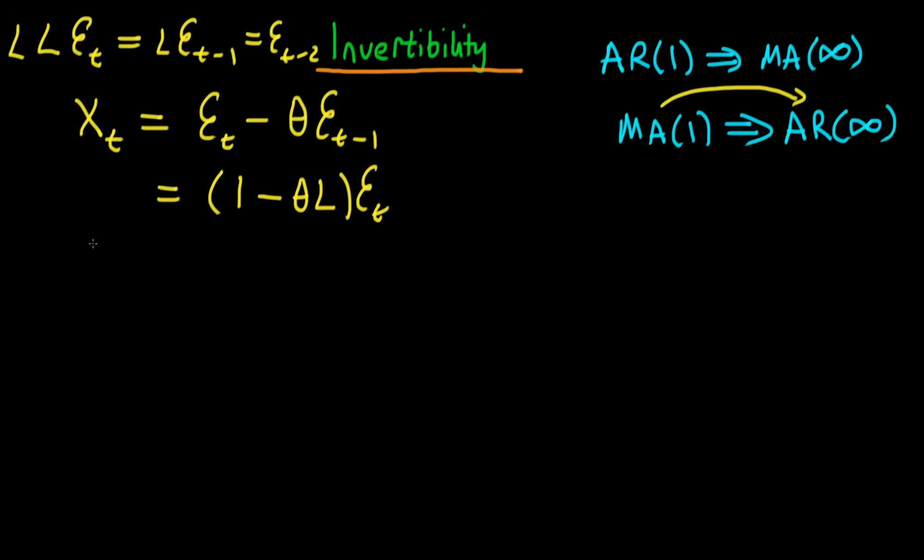So when we do this we've spoken about how we can actually use this L here as if it were just some sort of expression or some sort of algebraic quantity. So then what we can do is we can take XT and divide it through by 1 minus theta L and that's now equal to epsilon t.